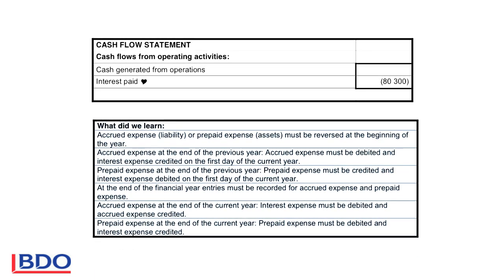If we look at the cash flow statement, the amount we will record as outflow of money will be $80,300. That is not the figure on our income statement, because the income statement shows the expense for the current year only. Included in this $80,300 is the accrued expense of the previous year, the expense for the current year, and the prepaid expense for the following year. In the cash flow statement, you don't look at the income statement figure — you want to see what was the actual outflow of money as a result of interest.